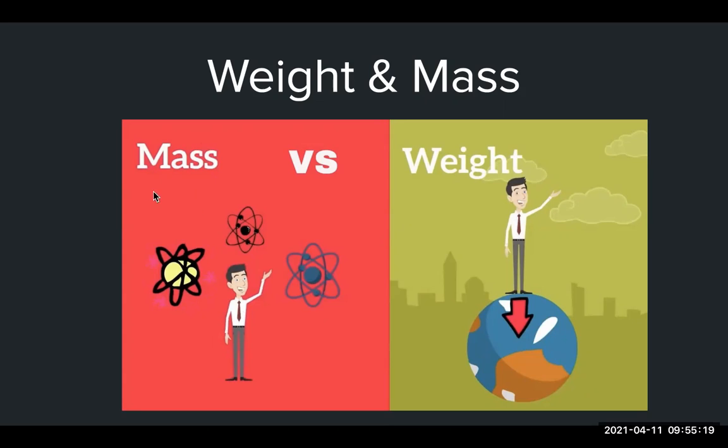Mass will stay the same whereas weight is a measure of the force of gravity acting on that object. Therefore the weight of an object will change if you test that weight on various planets.